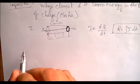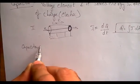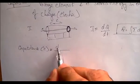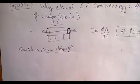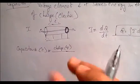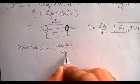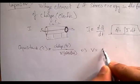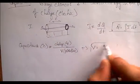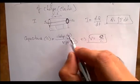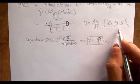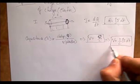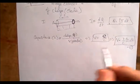We know that capacitance C equals charge Q for a given potential V: C = Q/V. From this, V = Q/C. Since Q = ∫i dt, substituting gives the voltage equation: V = (1/C)∫i dt. Keep this as equation one.